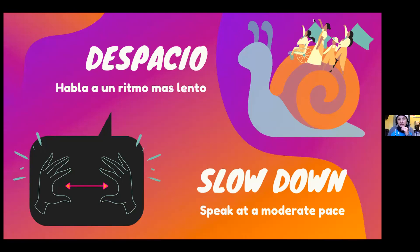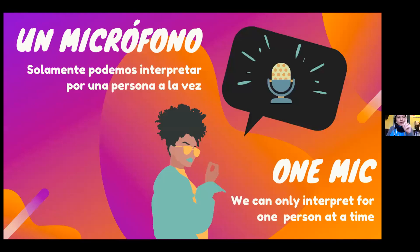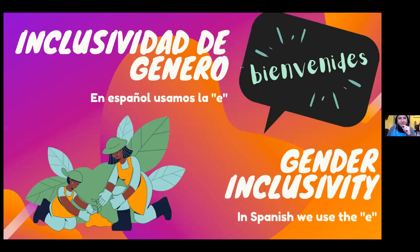Slow down — speak at a moderate pace. We'll use this signal if you're speaking too fast to ask you to slow down. Speak up — speak loud and clear; if we can't hear you, we'll use this signal to ask you to speak louder. One mic — we're only able to interpret for one person at a time. Even though our interpreters are really smart, they can only speak for one person at a time.